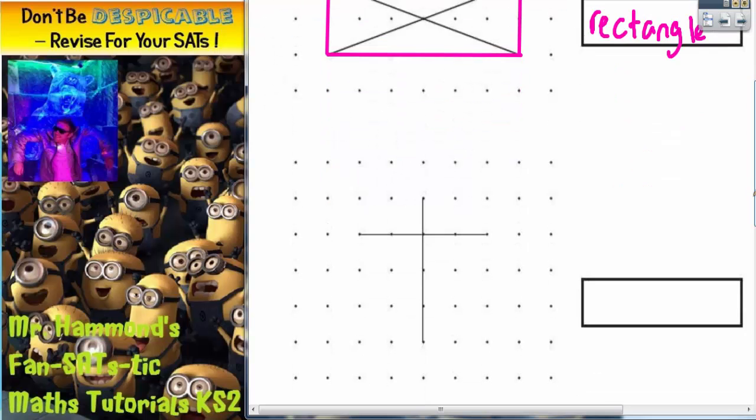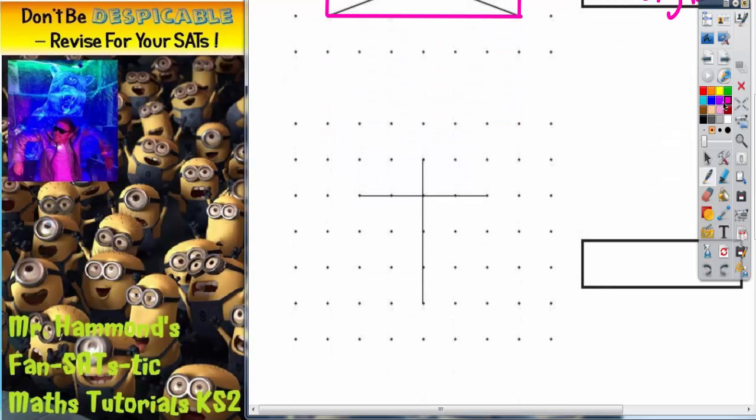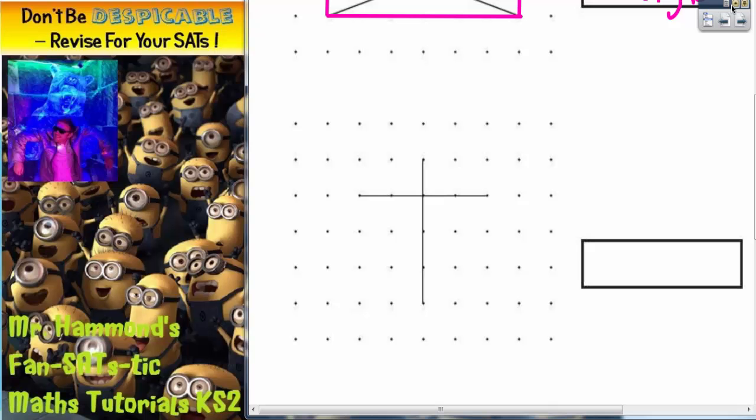Scrolling down we've got a second question to do. So again what we're going to do is we're going to join these four corners up and see if that helps us. There we go.